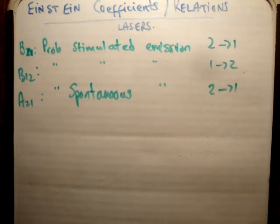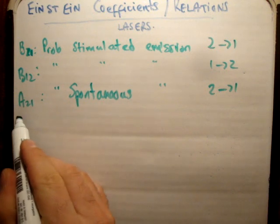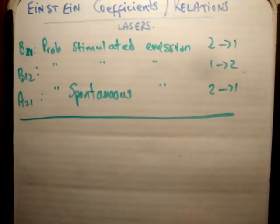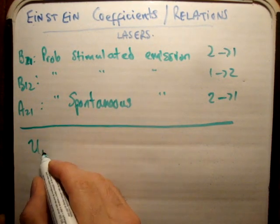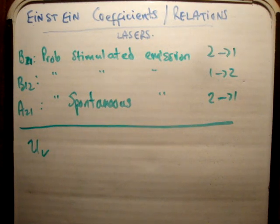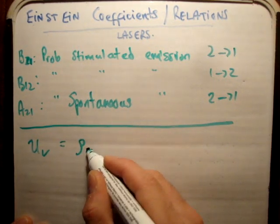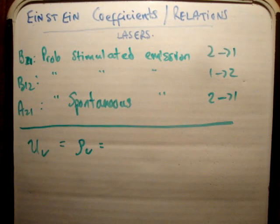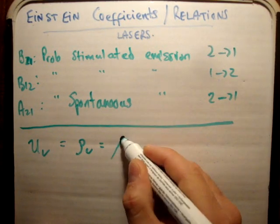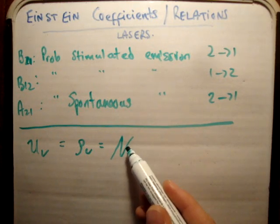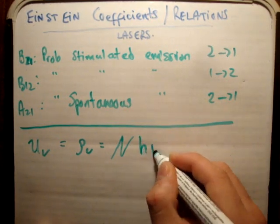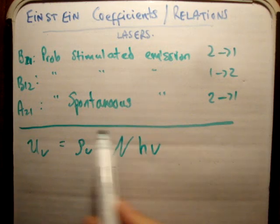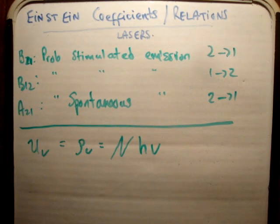Let's talk about the energy density per unit frequency interval. The energy density is the amount of energy in a unit volume. Sometimes people use u sub nu; I'm going to call it rho of nu because that's something we're probably familiar with. That's going to be equal to the number of photons per unit volume having a particular frequency — I'll call that capital N — multiplied by the energy of these particular photons. So this is the energy density per unit frequency interval.